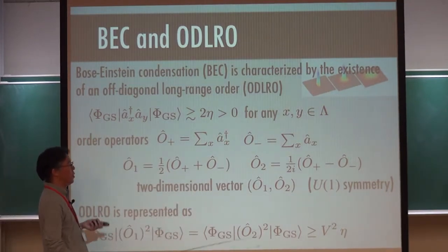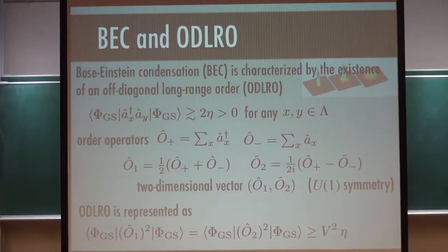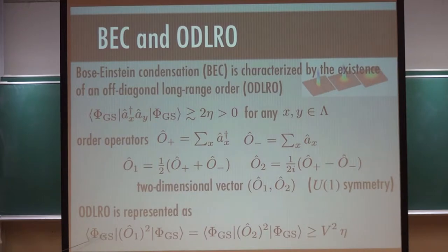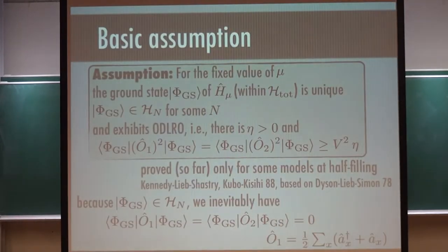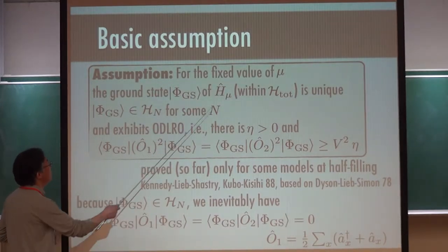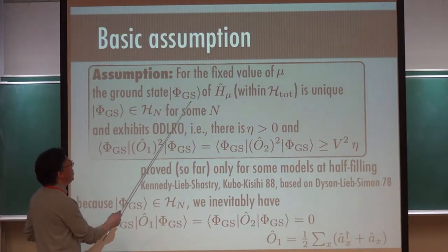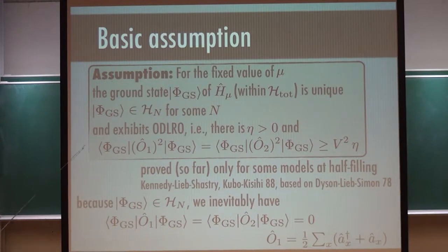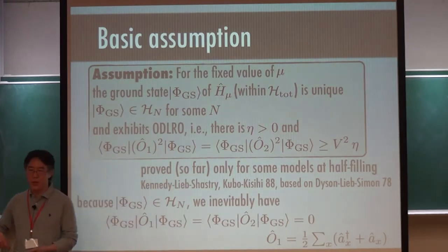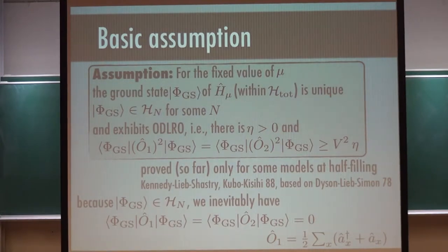Doing this by analogy with the spin system case, I define O1 and O2, which become a two-dimensional vector measuring the global U1 phase ordering in the system. The off-diagonal long-range order can be written in the familiar form: the expectation value in the ground state of O1 squared or O2 squared is greater than some bound. For a fixed value of V and mu, I assume the ground state of H_mu is unique, has a definite boson number N, and exhibits off-diagonal long-range order.